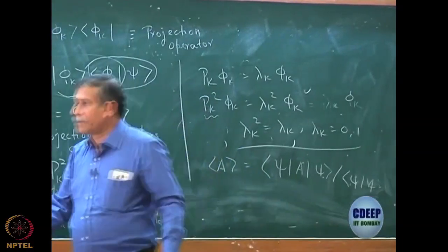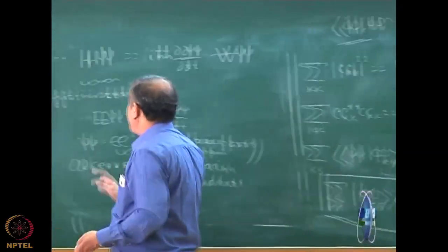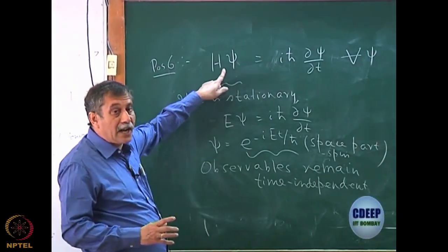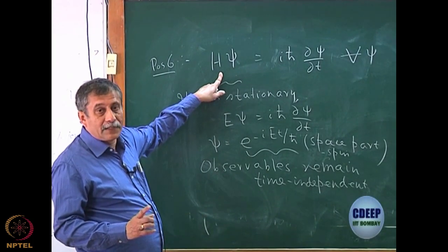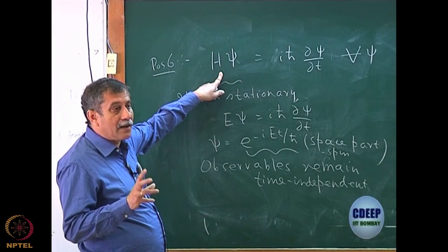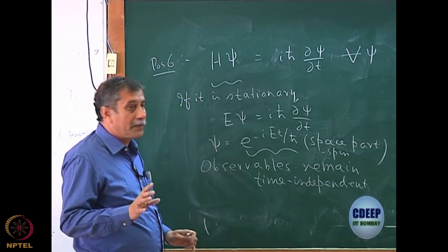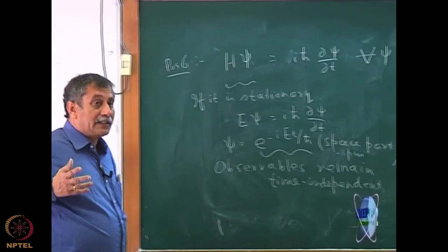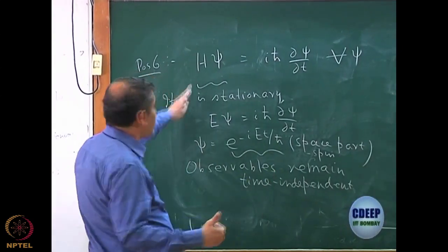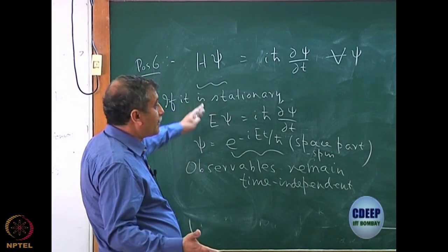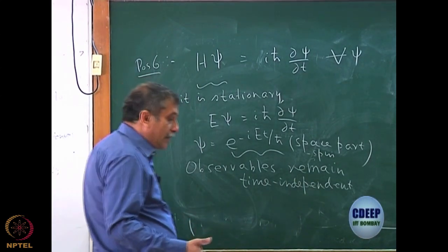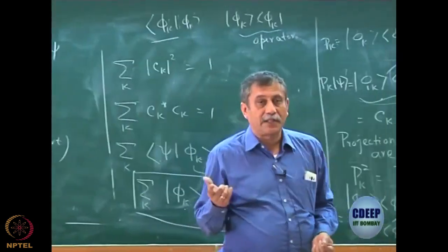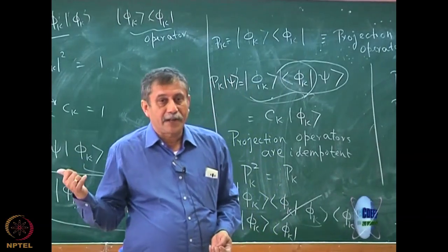All observables remain time-independent in the stationary state of the Hamiltonian because even taking an average value, the phase factor always cancels out. Real time dependence comes when ψ is not an eigenfunction of H — the non-trivial time dependence starts to appear. This is also a very important significance of a non-stationary state: time really enters only when the state is not an eigenfunction of the Hamiltonian. In this context, we also showed a very important theorem called the Ehrenfest theorem.